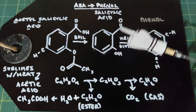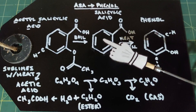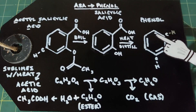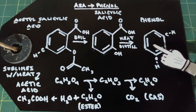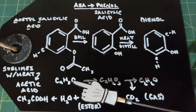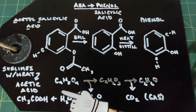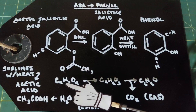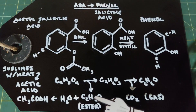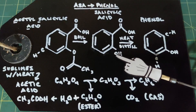Then we're going to take the salicylic acid and distill it over heat. When we do that, we end up with phenol, which has lost everything except for the OH group. Starting with aspirin at C9H8O4, we lose C2H2O when we end up with just the OH group.